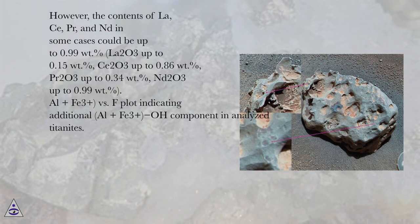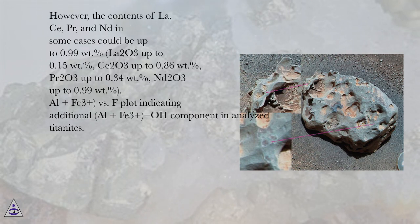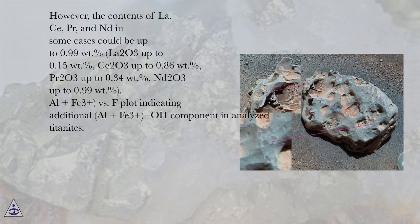However, the contents of La, Ce, Pr, and Nd in some cases could be up to 0.99 weight percent; La₂O₃ up to 0.15 weight percent, Ce₂O₃ up to 0.86 weight percent, Pr₂O₃ up to 0.34 weight percent, Nd₂O₃ up to 0.99 weight percent.